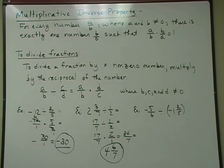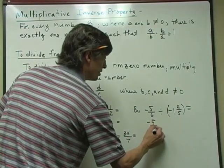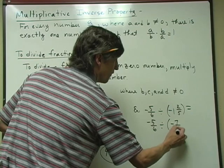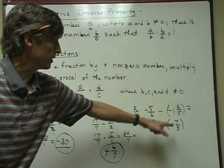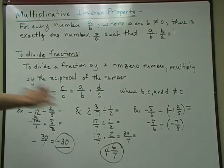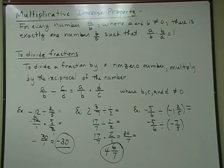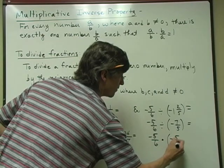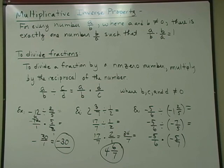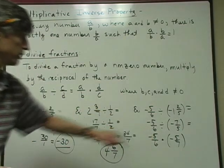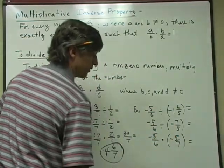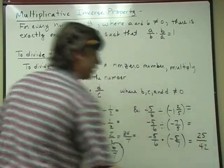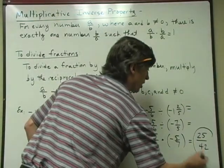One more: I have negative 5 sixths divided by negative 1 and 2 fifths. Negative divided by negative is positive. I'll write this as negative 5 sixths divided by negative 7 fifths — I change the mixed number to an improper fraction. Some students think they can cross-cancel the 5s, but you can't while it's still a division problem. I change it to multiplication and multiply by the reciprocal, which is negative 5 sevenths. Negative times negative is positive. Nothing cross-cancels — I get 25 on top and 42 on the bottom. That's a proper fraction already in lowest terms.